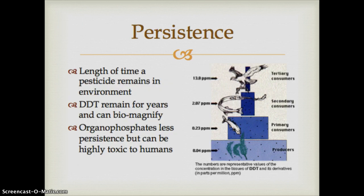One of the major concerns with pesticide use is persistence — the length of time a pesticide stays in the environment. DDT and other chlorine-containing pesticides remain in the ecosystem for years and can biomagnify, so that each level of the food chain has an increased concentration of that chemical all the way up to tertiary consumers. Organophosphates are slightly less persistent, but they can be highly toxic to humans, which is also still a concern.